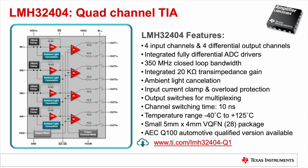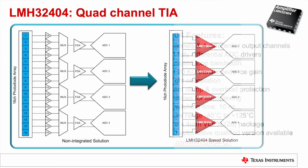This device features integrated ambient light cancellation, input current clamps, and output switches that enable many versatile multiplexing options. These features make the LMH32404 an excellent amplifier to alleviate the complications surrounding multi-channel optical systems. This diagram shows how four LMH32404 devices can be used to greatly reduce the area and complexity of a 16-channel optical front end.